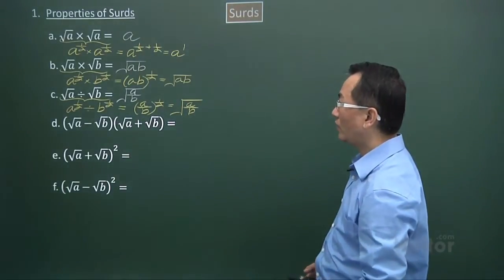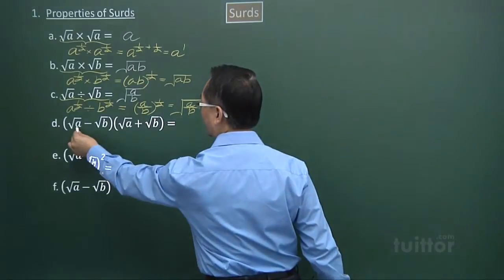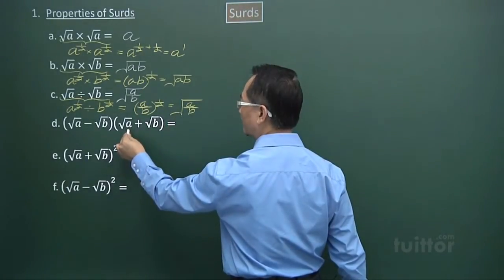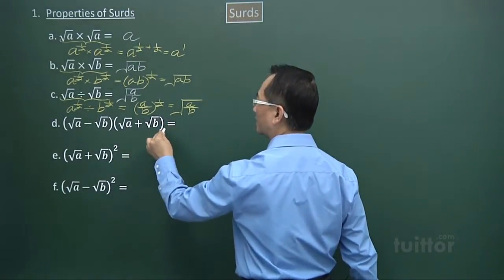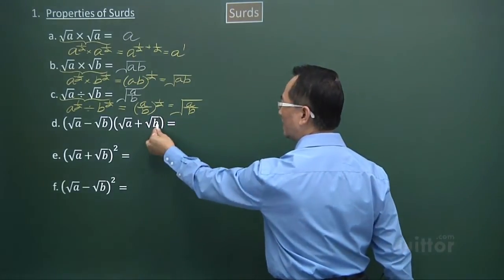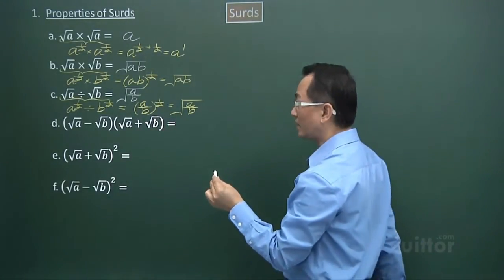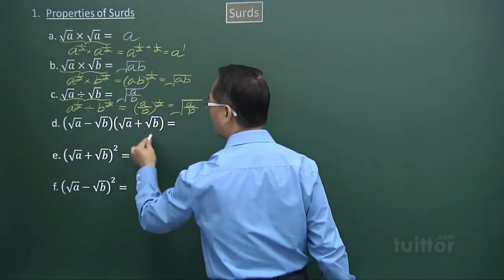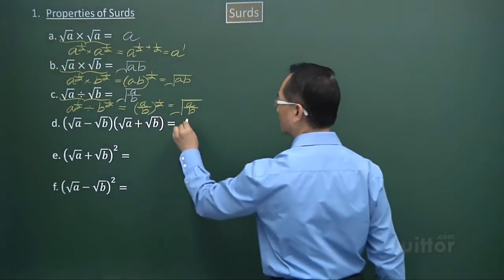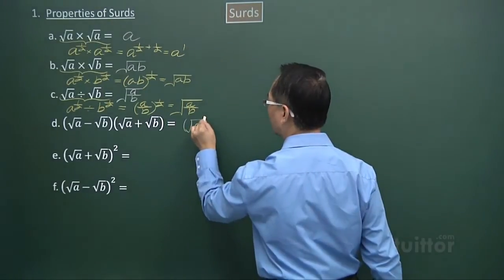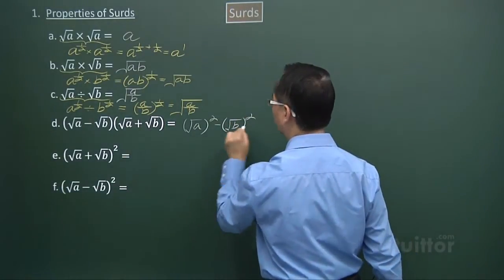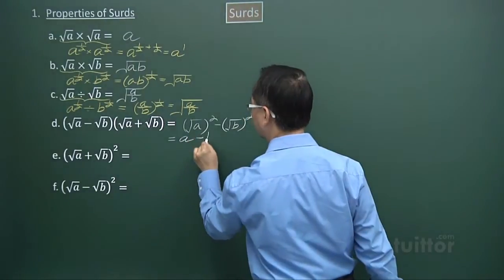For part d, we have square root a as the first term in the first bracket, and square root a also as the first term in the second bracket. Square root b is the second term in the first bracket, and square root b is the second term in the second bracket — one bracket uses difference, the other uses sum. The result is a difference of two squares: square root a squared minus square root b squared, giving a minus b.